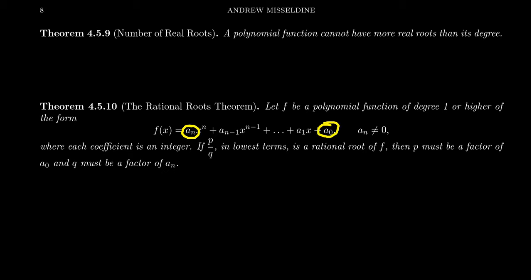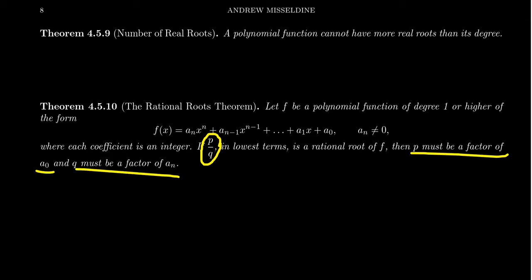What we're going to do is look for divisors of the leading term and look for divisors of the constant term. The rational roots theorem claims that all of the rational roots of this polynomial will be of the form p over q, where p is a factor of the constant term and q is a factor of the leading term. So we can look at the divisors of the first and last coefficient and compare them to find all the possible rational roots of a polynomial.